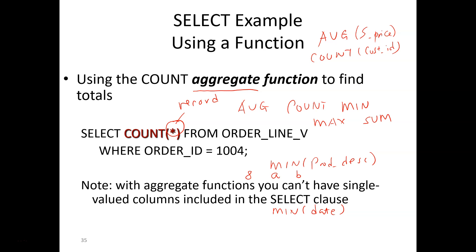One important thing about these functions is they give you the aggregate result — not a result for individual records, but for a group or the whole table. For example, SELECT COUNT(*) FROM order_line_view WHERE order_id = 1004 will find all order line records with that order ID. If order 1004 has five order lines, it will give you the number five. When using a function, the result is sometimes just a single number rather than a table.